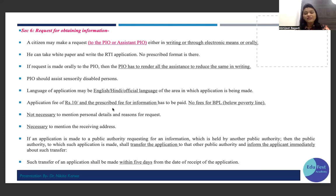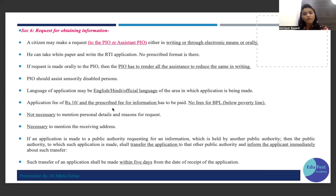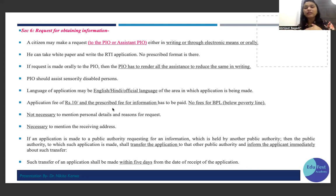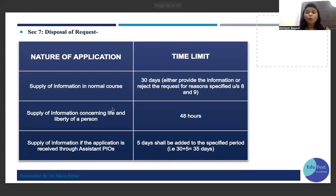If you file an RTI application in a department where it does not fall within their ambit, that department's PIO must immediately forward the application to the appropriate department. The PIO must also immediately inform the applicant that the application has been transferred to another department and that further updates should be sought from that department.